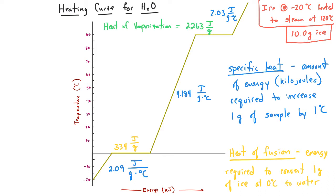Just like for fusion, for vaporization there is a heat of vaporization. That is the amount of heat required to convert 1 gram of water at 100°C to the vapor phase at 100°C. The heat of vaporization for water is 2,263 joules per gram.